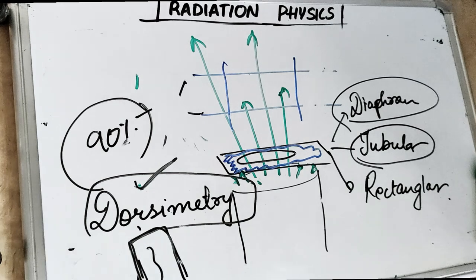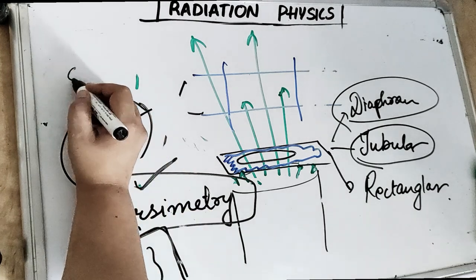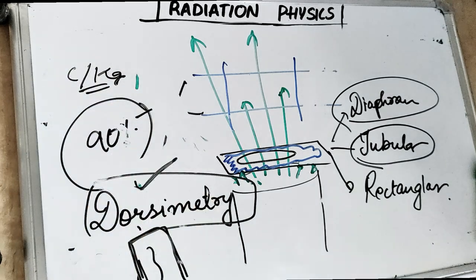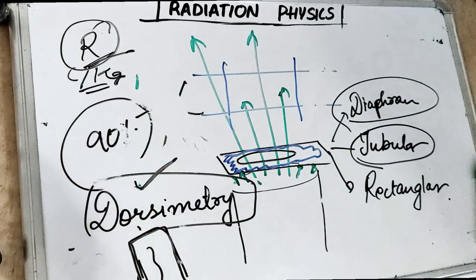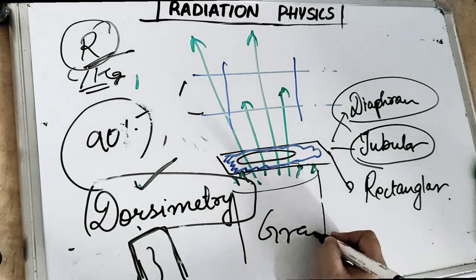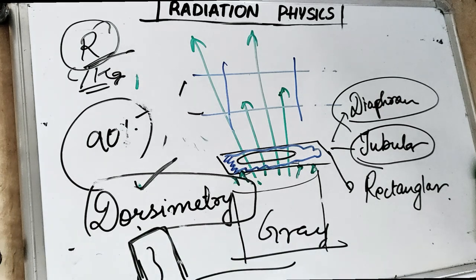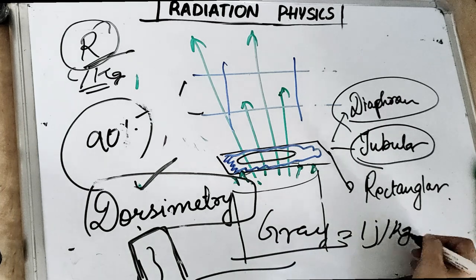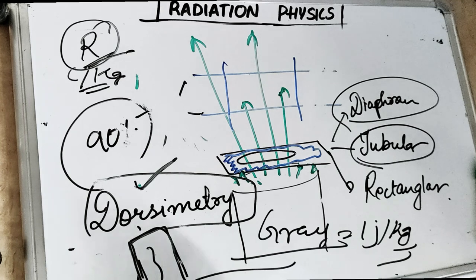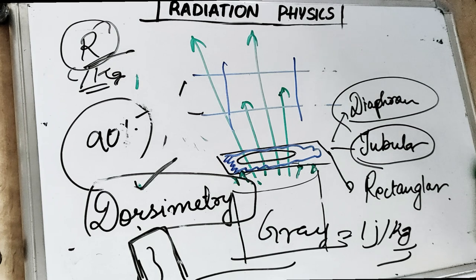Units of exposure: in SI units, exposure is measured in coulombs per kg — also called Roentgen. Absorbed dose is measured in Gray — one Gray equals one joule per kg. Kinetic energy released per mass is also called KERMA or absorbed dose. Dose equivalent is the basic unit of radiation protection, used to compare biological effects of exposure to various radiations, and is measured in Sieverts.